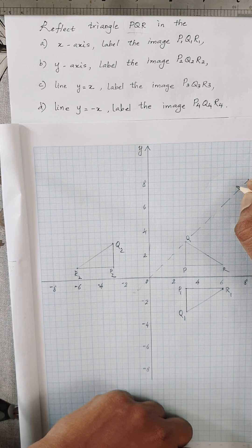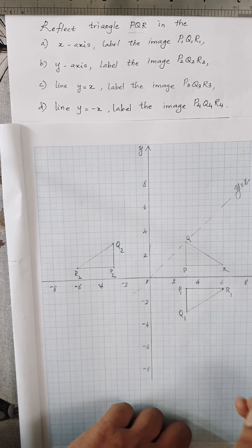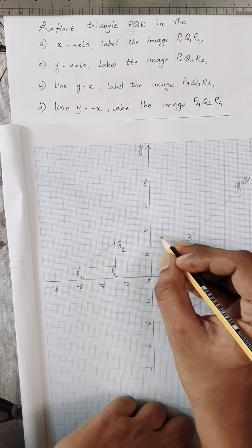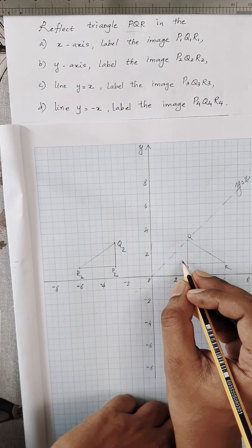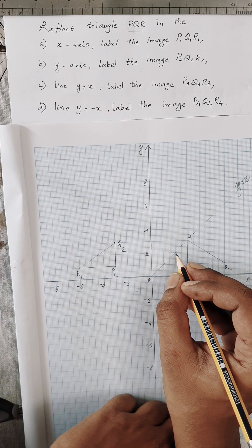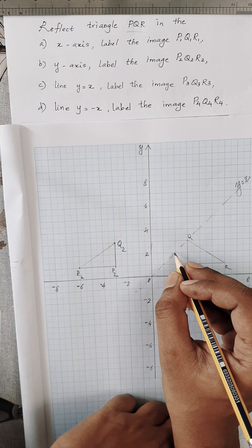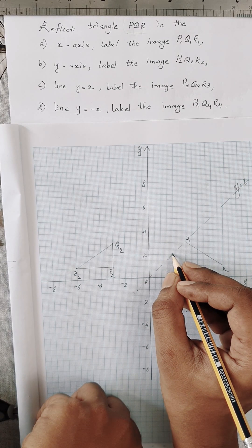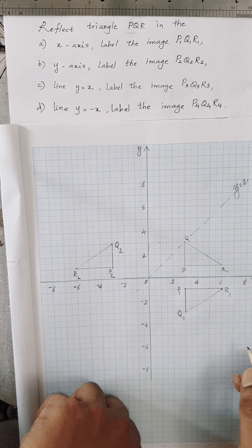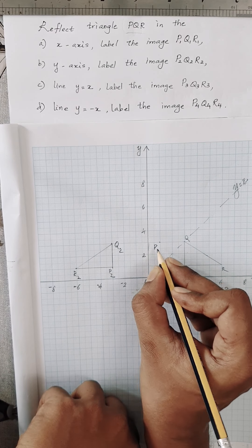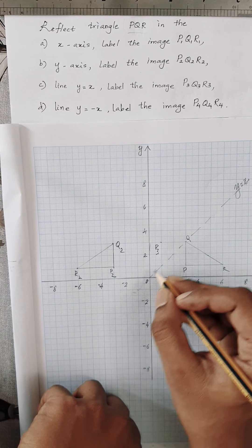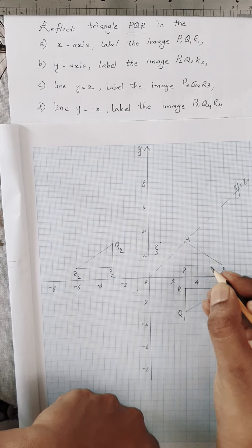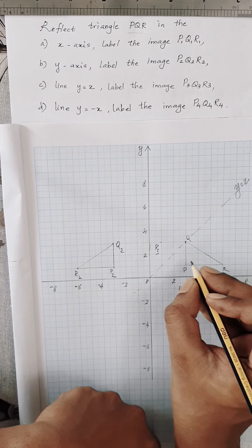Let's see how we can reflect in this line y equals x. If you take point P, it must be reflected perpendicular to the mirror line, at right angles to it. One method is to count the diagonal distance. If P is 1 unit diagonal from the mirror, then the image P3 should also be 1 unit from the mirror on the opposite side, perpendicular to the mirror line. So that's point P3. Q is on the mirror line, so the distance of Q from the mirror line is 0. The image will also be at distance 0 — meaning it stays there. So Q3 is the same point as Q.